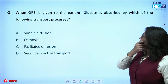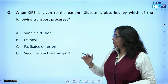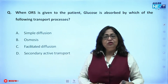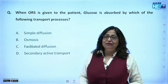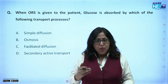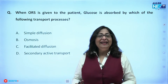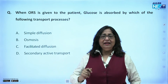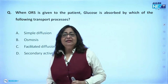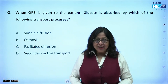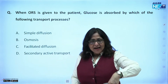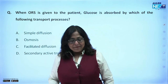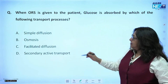Let's look at the next question: when ORS is given to a patient, glucose is absorbed by which transport process? When looking at transport across the cell membrane, there are two major types — passive transport and active transport. Passive transport is downhill transport along an electrochemical gradient, while active transport is uphill, against an electrochemical gradient. The key difference is that passive transport does not require energy, but active transport needs energy.